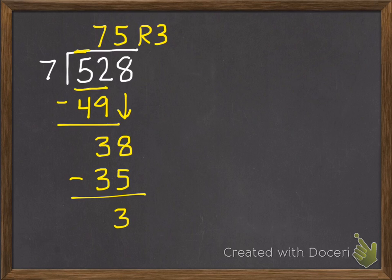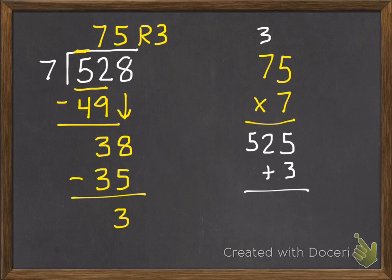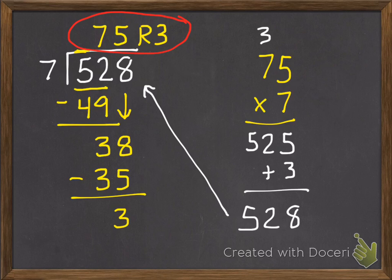Just like before, we're going to check these with multiplication. So 75 times 7. So that's our quotient times our divisor. 5 times 7 is 35. 7 times 7 is 49. Plus 3 is 52. And we add in our 3 that was our remainder. And we get 528. Which means our answer is right.